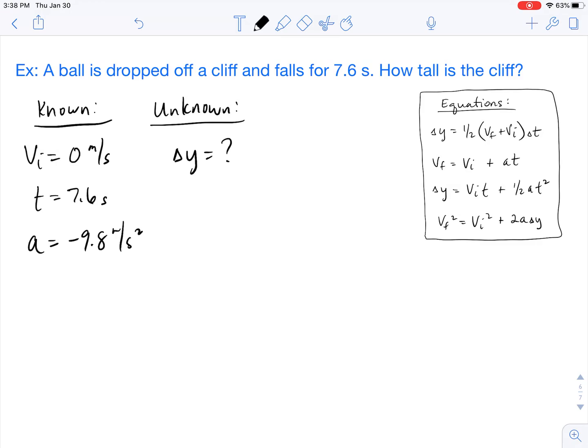The easiest way for me to pick the right equation is by looking at my knowns and unknowns and determining what variable wasn't even listed at all. So we have vi, we have t, we have a, and we have delta y. The only thing not listed is vf, or our final velocity.